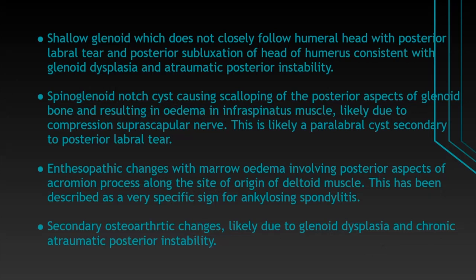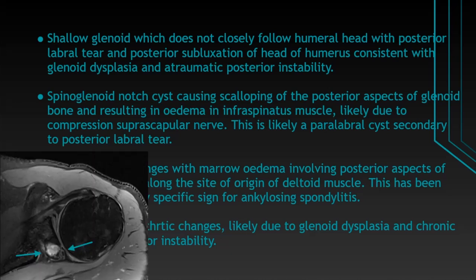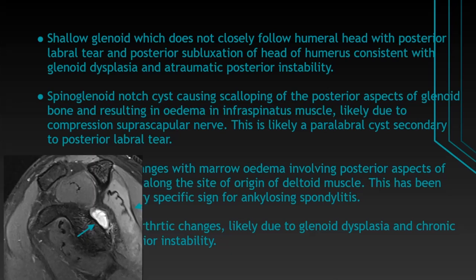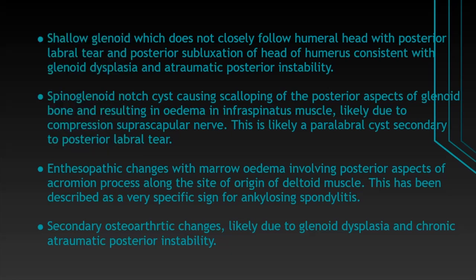To summarize, there is a shallow glenoid which does not closely follow the humeral head, with posterior labral tear and posterior subluxation of the head of humerus, consistent with glenoid dysplasia and atraumatic posterior instability, as there was no history of trauma. A spinoglenoid notch cyst is causing scalloping of the posterior aspects of the glenoid bone and resulting in edema in the infraspinatus muscle, likely due to compression of the suprascapular nerve — likely a paralabral cyst secondary to posterior labral tear. Enthesiopathic changes with marrow edema involving posterior aspects of the acromion process along the site of the original deltoid muscle has been described as a very specific sign for ankylosing spondylitis. Secondary osteoarthritic changes are likely due to glenoid dysplasia and chronic atraumatic posterior instability.